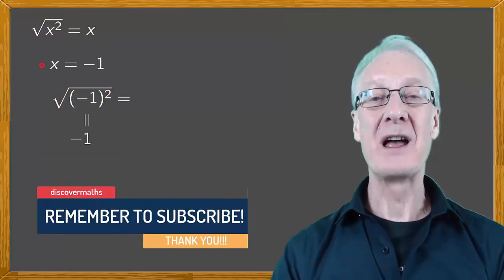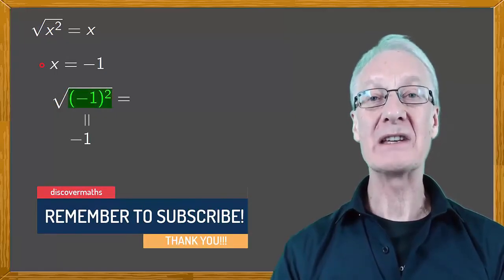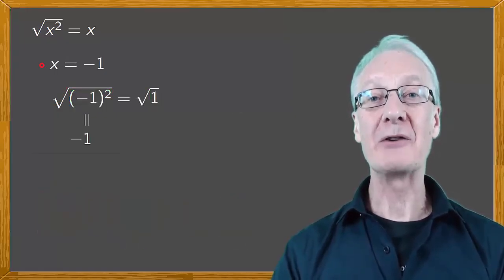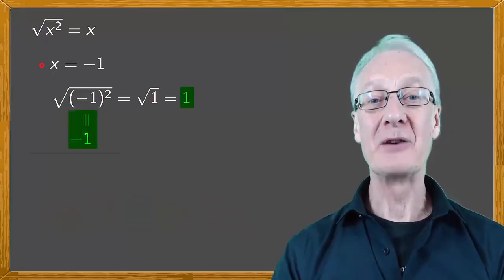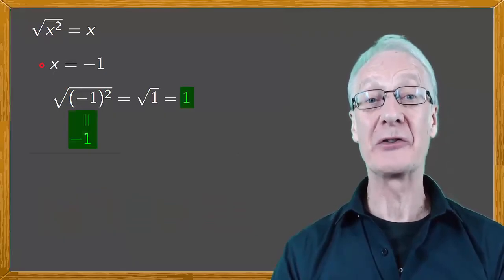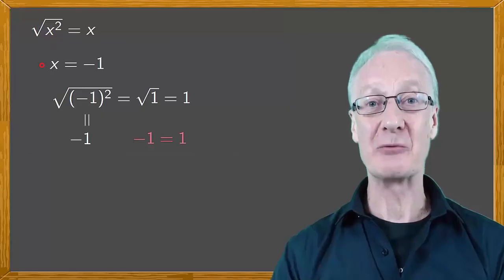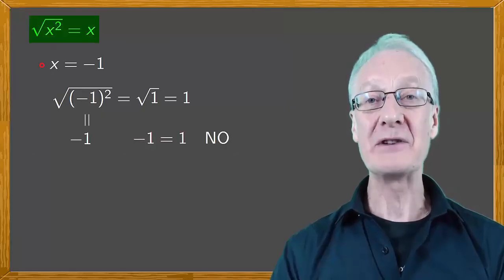But consider this. Minus 1 squared is 1, and the square root of 1 is 1. Well, that contradicts our previous result because 1 doesn't equal minus 1. So the previous property we assumed isn't true.